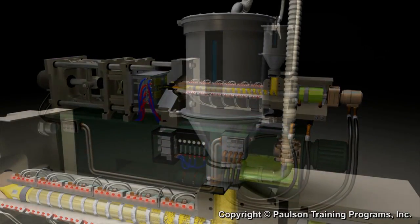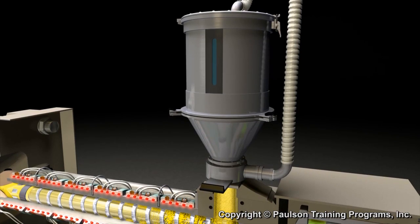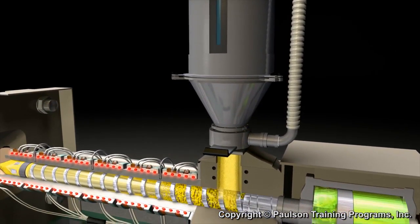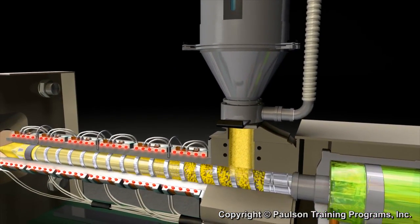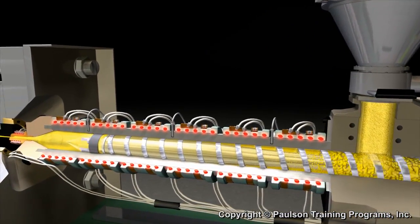The plastic raw material is stored in the hopper. From the hopper, the plastic falls onto the rotating screw where it is conveyed forward by the flights of the screw and is gradually melted as it moves forward.